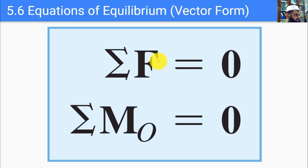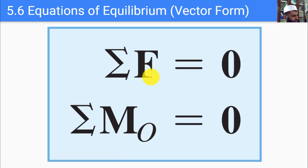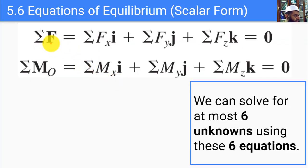The equations of equilibrium for three dimensions are that the sum of all forces acting on a body should equal zero, and the sum of all moments acting on that body at any point should equal zero. These are necessary and sufficient conditions for equilibrium. These are vector equations, not scalar equations, so in three dimensions each vector equation represents a set of three scalar equations.